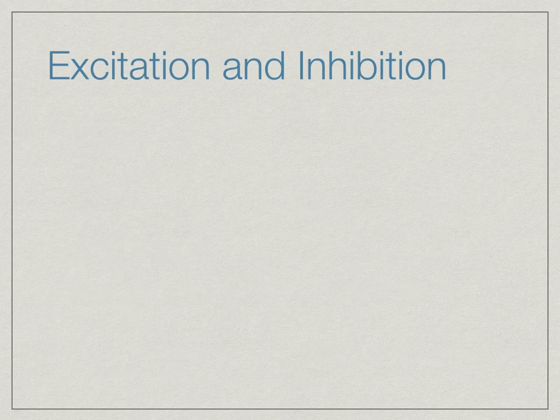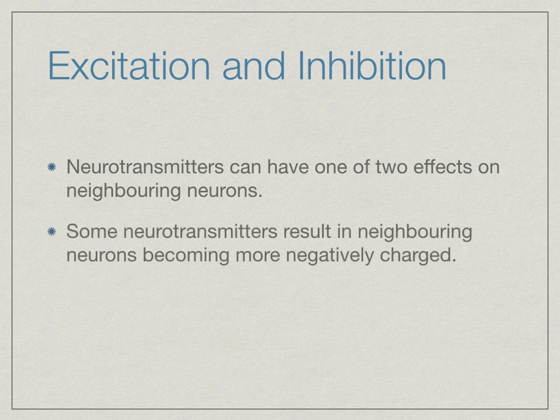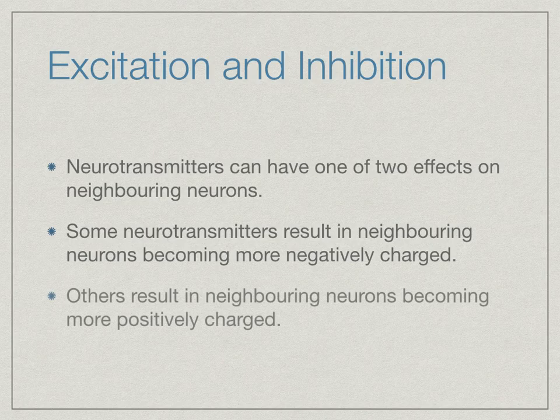Neurotransmitters can have two effects on a neuron: excitation or inhibition. Some neurotransmitters, such as serotonin, cause inhibition — making the neighbouring neuron more negatively charged, so it is less likely to fire. On the other hand, certain neurotransmitters, such as adrenaline, make neighbouring neurons more positively charged, making them more likely to fire — for example, during a fight or flight response.